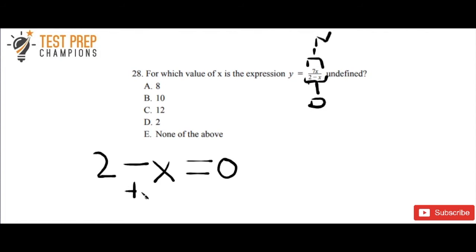So we want to add x to both sides. Because whatever you do to one side, you always do to the other. So minus x plus x, that cancels out. And we're left with 2 equals x.